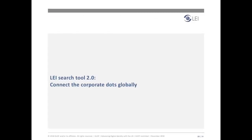There are different ways to access GLEIF's publicly available LEI data pool — for example, via the web-based search tool or our file download service. Depending on how users choose to access the LEI data pool, they are able to source additional information relevant to the LEI record, such as enhanced and enriched reference data, or other identifiers that have been mapped to the LEI. Here to tell you about the new LEI search tool 2.0 developed by GLEIF is Head of IT Development and Operations, Christoph Schneider.